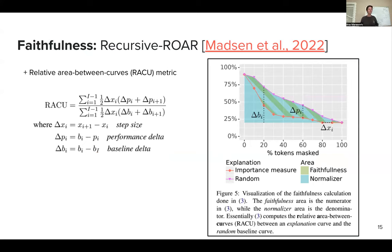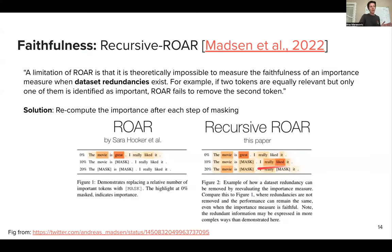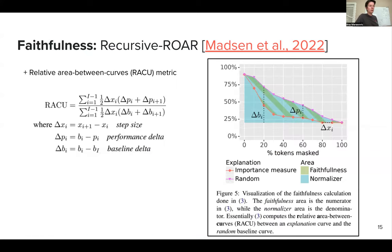So what Recursive ROAR does is: we do everything we did with ROAR, except that at every stage — when masking a certain percent of tokens — we recompute the input attribution. So in the first iteration, we mask 10% and identify 'great' as most important; then we recompute gradient attribution; now 'liked' is really important, so we mask it in the next iteration and see a notable change in accuracy. This shows both that the gradient attribution is fine and the model is doing the task well.